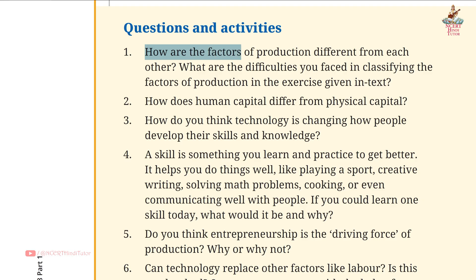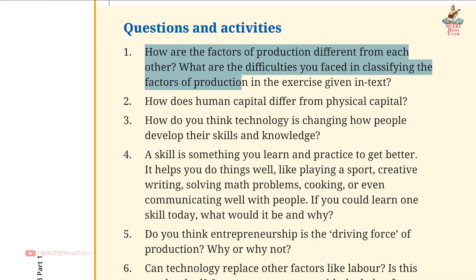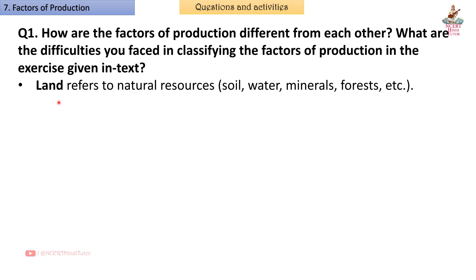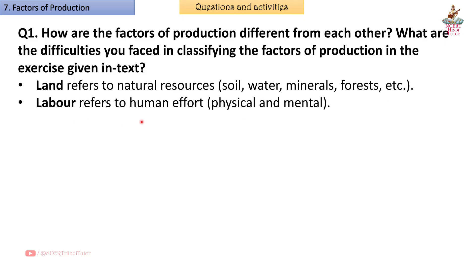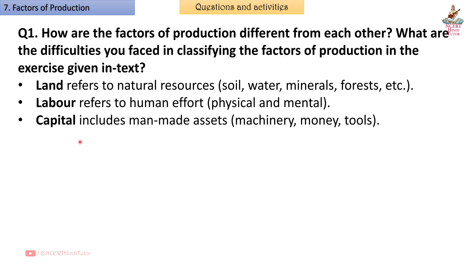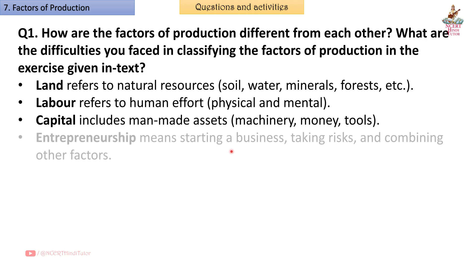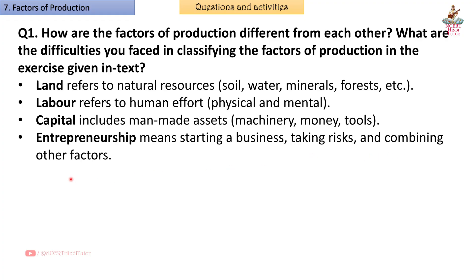Question 1: How are the factors of production different from each other? What are the difficulties you faced in classifying the factors of production in the exercise given in the text? Answer: Land refers to natural resources — soil, water, minerals, forest, etc. Labor refers to human effort, both physical and mental. Capital includes man-made assets like machinery, money, and tools. Entrepreneurship means starting a business, taking risks, and combining other factors.